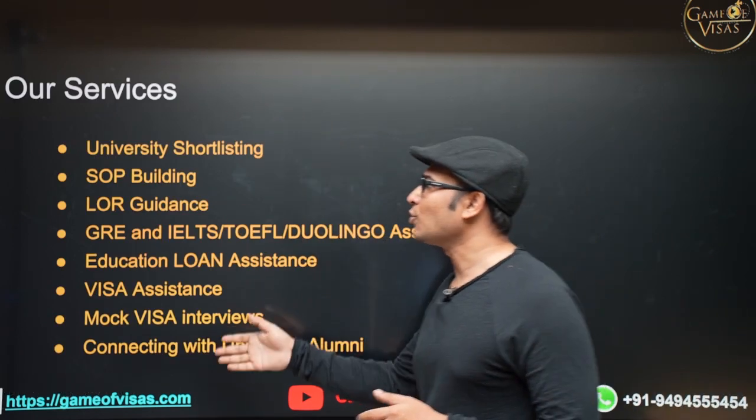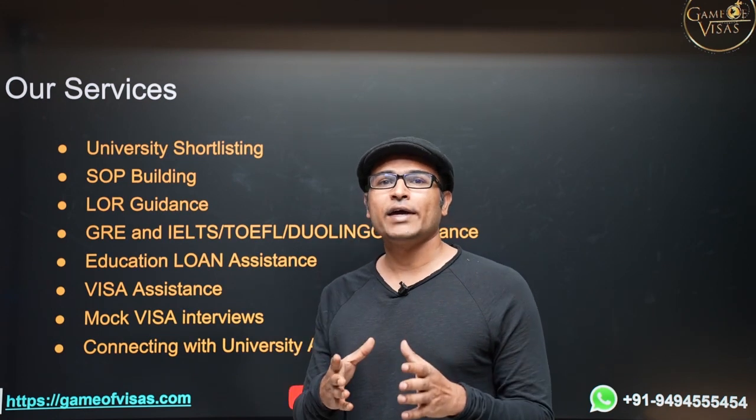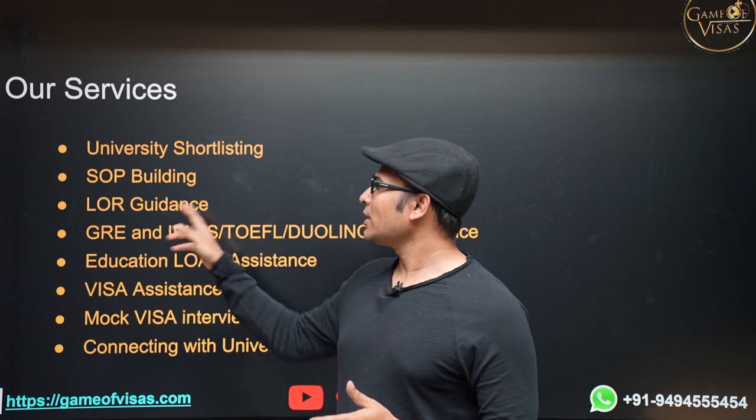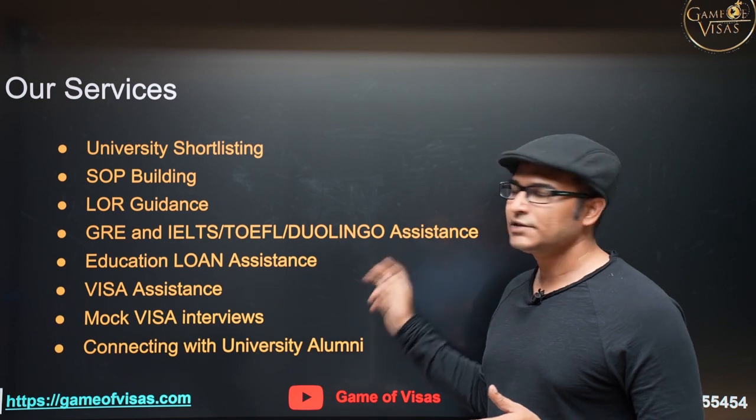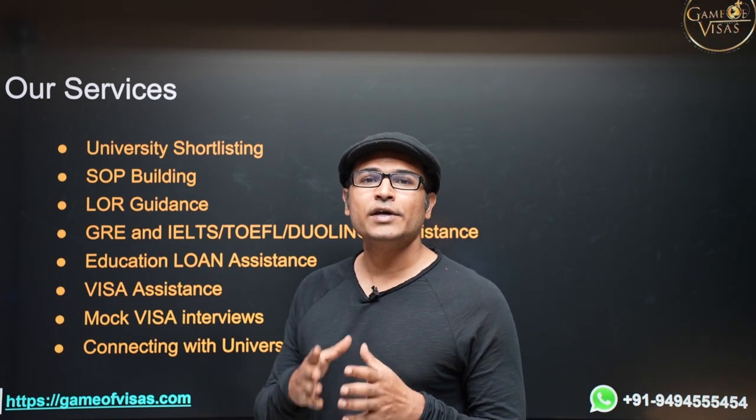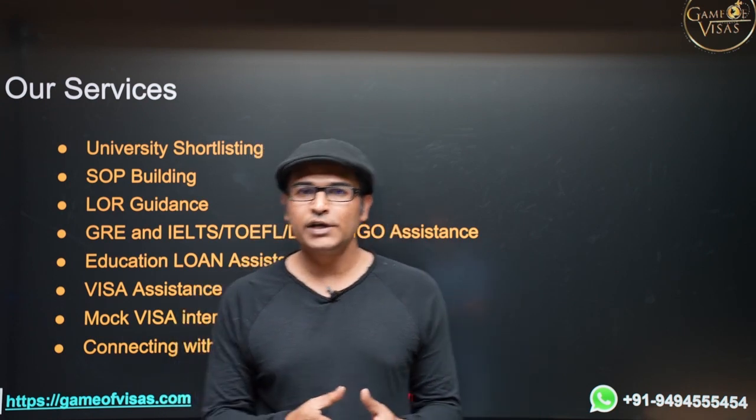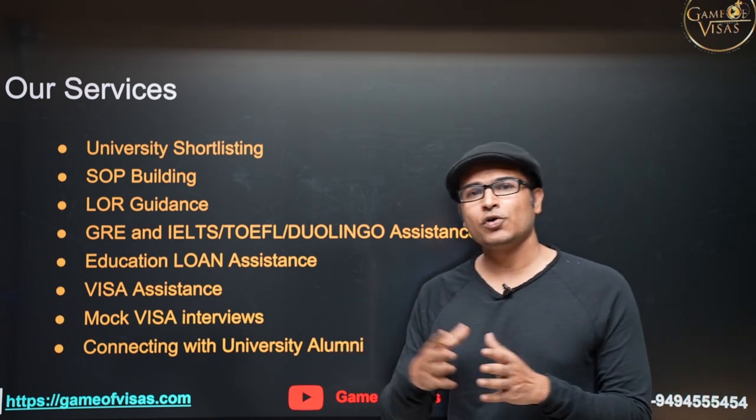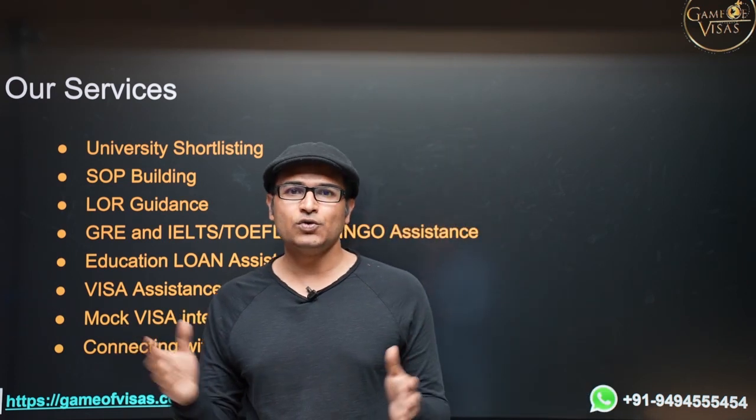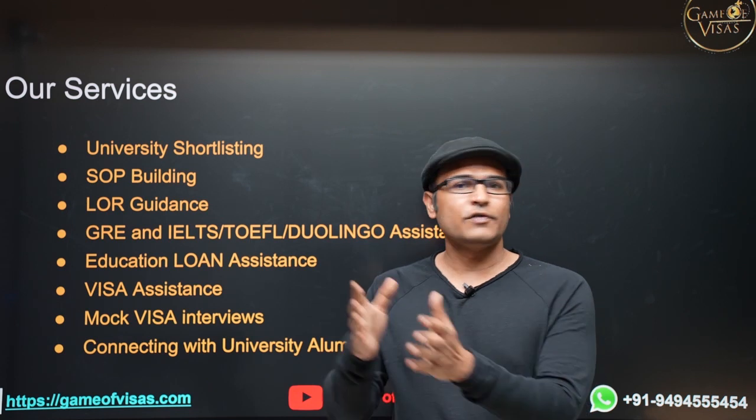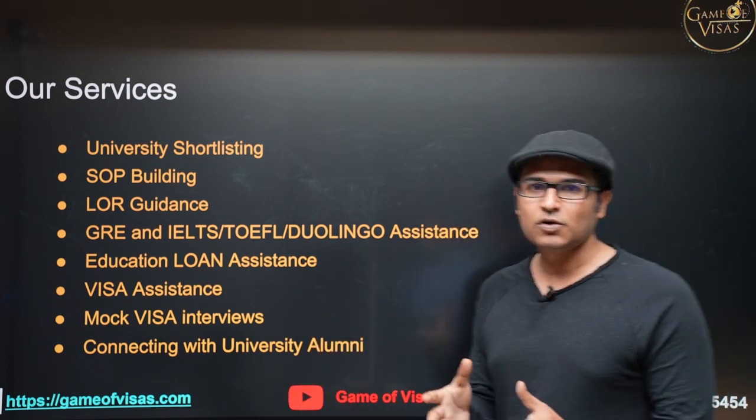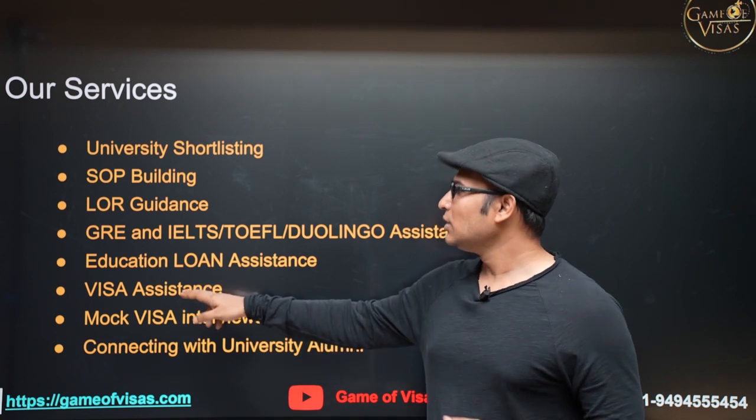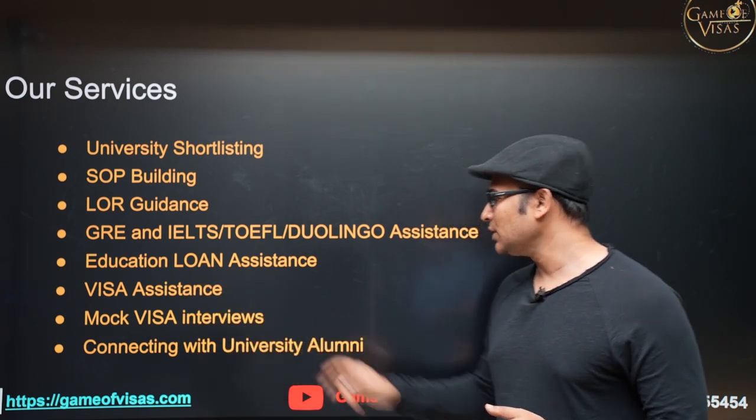And these are all the services that we provide. University shortlisting. So depending on your profile, we will shortlist what are the universities that you have to apply, and statement of purpose building, and then LOR guidance, and GRE and English test assistance, and education loan assistance. So you don't have to have any collateral, which means without any security, now you can get education loan. Getting education loan is very simple these days. And whatever the amount of fee that you have, you have a range of universities. You can apply for 10 lakh universities, 20 lakh universities or 50 lakh universities. But whatever it is, you are going to get a complete education loan, and you can pay off your education loan in one year after you get a job. And then we do visa assistance, mock visa interviews, and then connecting with the university alumni.